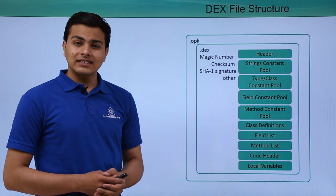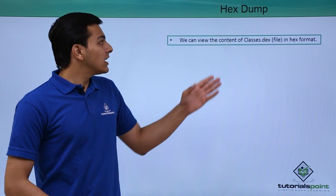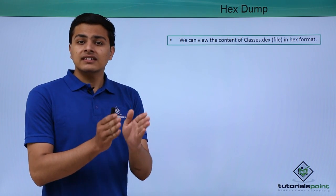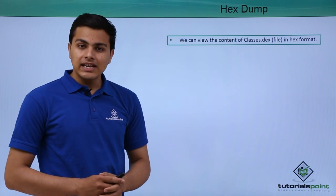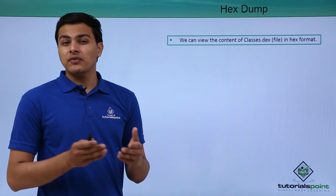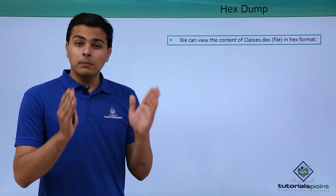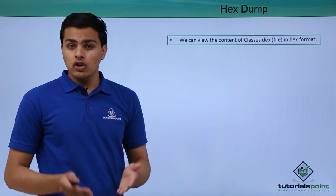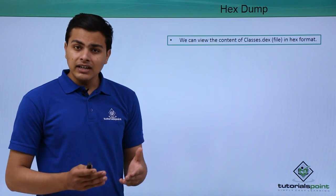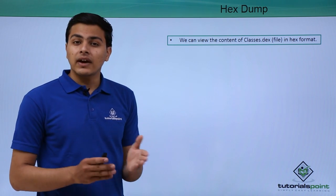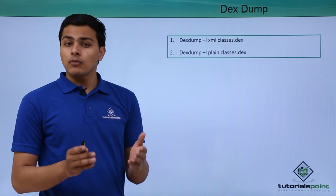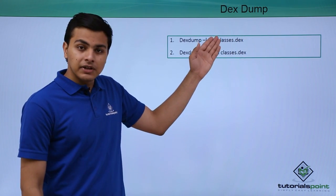The first utility we can use is hexdump. As the name suggests, hexdump lets us analyze the DEX file in hex format. However, reading a file in hex format is very complicated — it's not something a human can easily do — so we can't use hexdump to find proper information about a DEX file.